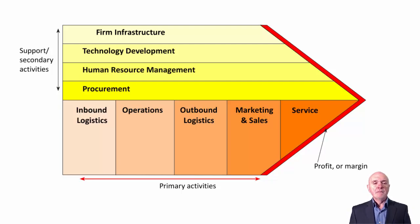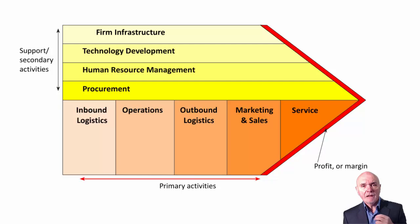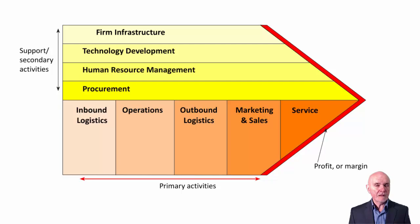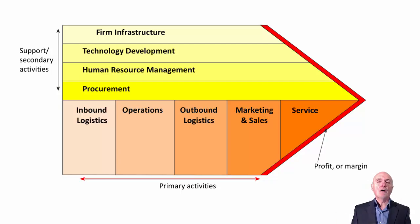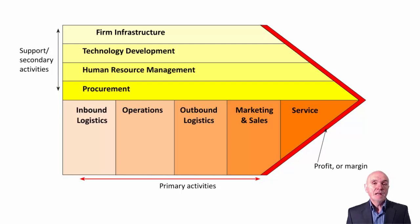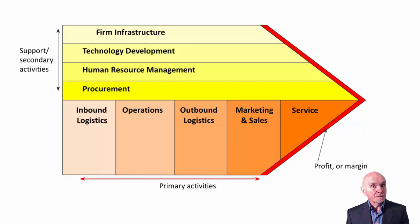The elements here include firm infrastructure, which is a bit like the head office — how we organise the accounting and admin departments. The accounting department can be affecting inbound logistics, operations, outbound logistics and so on, which is why they're written across the top. Technology development is basically research and development — improving processes and improving the products themselves. Human resource management covers recruitment, training, appraisal, retention and so on.